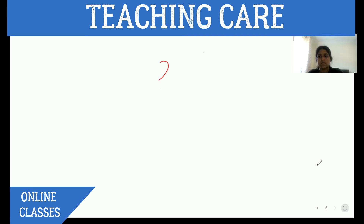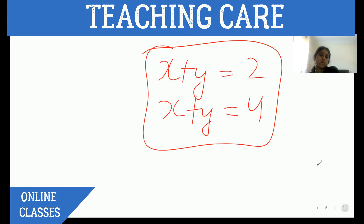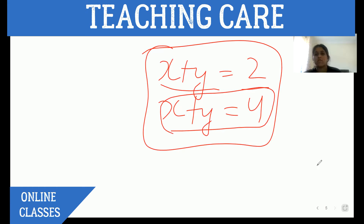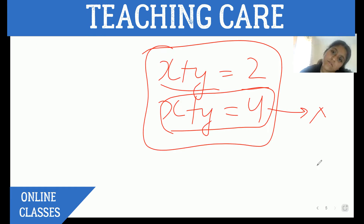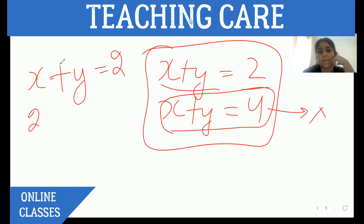If I give you x plus y equals 2 and x plus y equals 4, can we use these two equations and solve them? No — because if x plus y equals 2, it cannot also equal 4. That equation itself is wrong. So two different relations between the same two variables are required. For example, x plus y equals 2 and 2x plus y equals 4 — that can work.